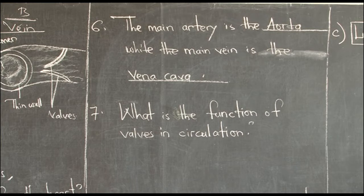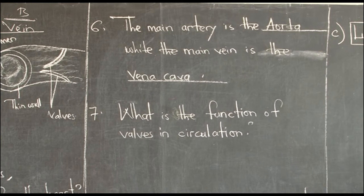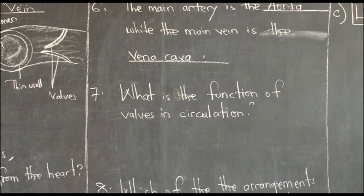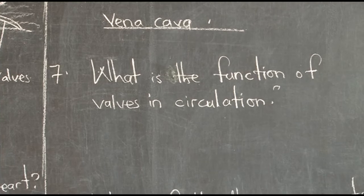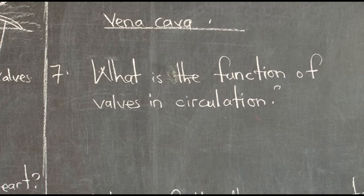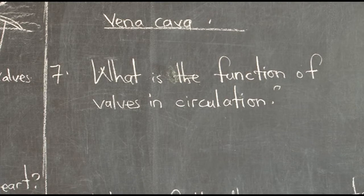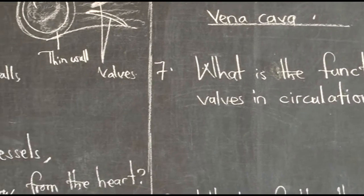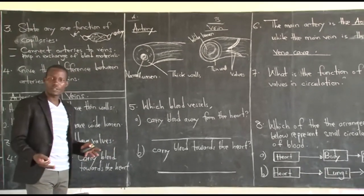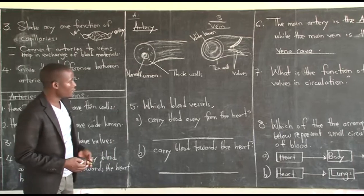Number seven asks: what is the function of valves in blood circulation? We have looked at this when talking about veins — veins have valves. There are also different valves within the heart, such as the tricuspid valve, the bicuspid valve, and the semilunar valves. Please check on why those valves are important in the human heart.